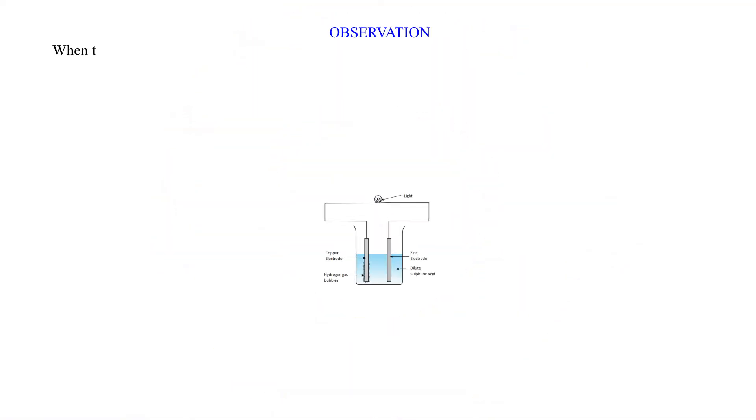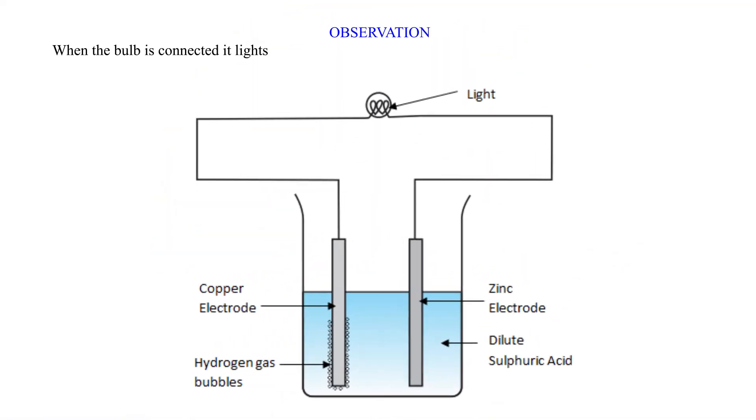Observation. When the bulb is connected it lights brightly but dims after some time. Bubbles form around the copper plate.